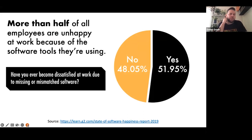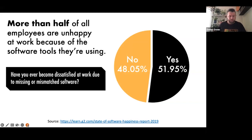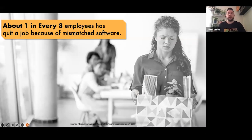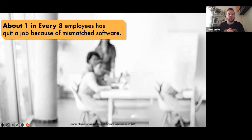Some quick stats: more than half of all employees are unhappy at work because of the software tools they're using. These stats come from G2's 2019 State of Software Happiness report. Being provided the right tools plays into our level of job satisfaction. And quite surprisingly — one in every eight employees has quit a job because of mismatched software.